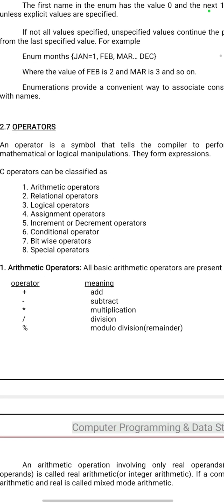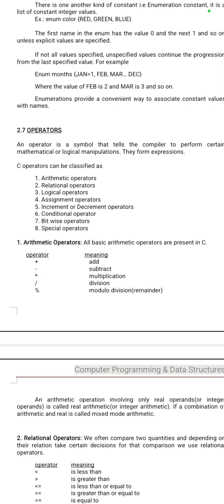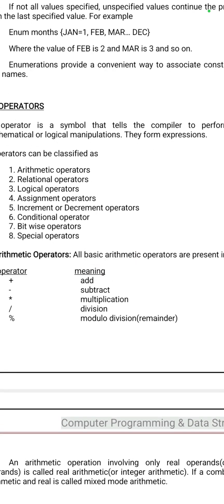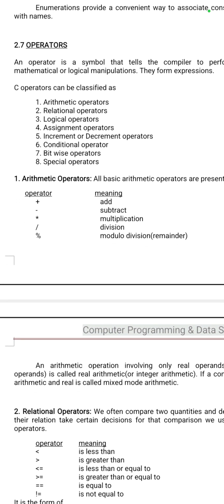A very important question is operators. The different types of operators are: arithmetic operators, relational operators, logical operators, assignment operator, increment or decrement operator, conditional operator — also called ternary operator because some are binary and some are unary — bitwise operators, and special operators.